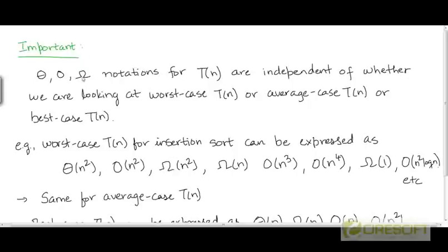Similarly, just because big omega notation represents a lower bound on a function does not imply that the function being represented is the best case running time. We can use any of these notations with any of the running times. We can represent the worst case, average case, and best case running times using all three notations.